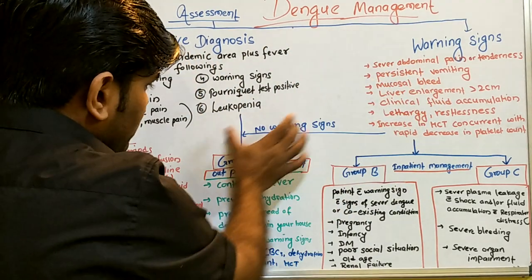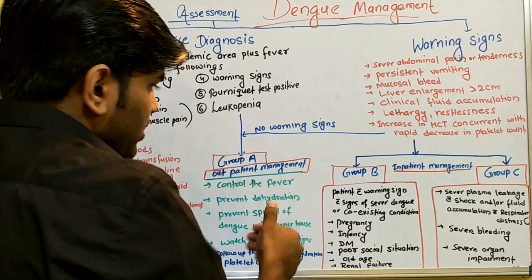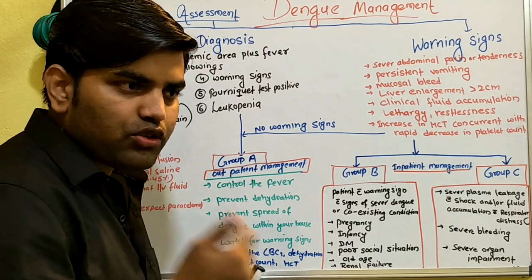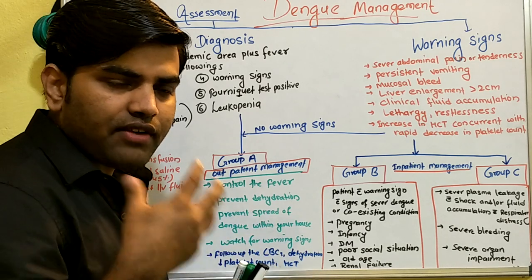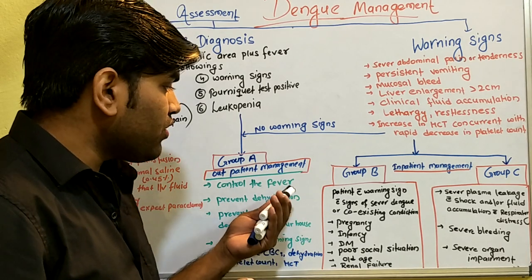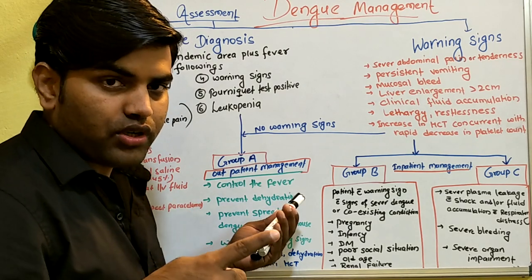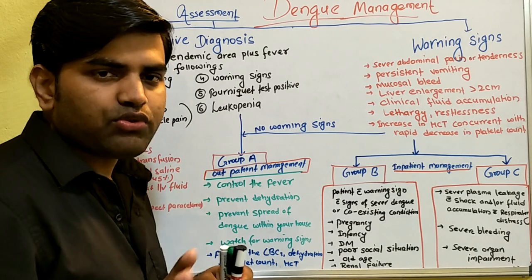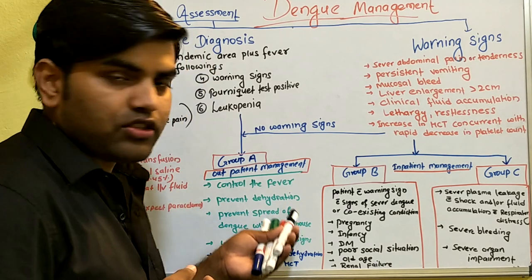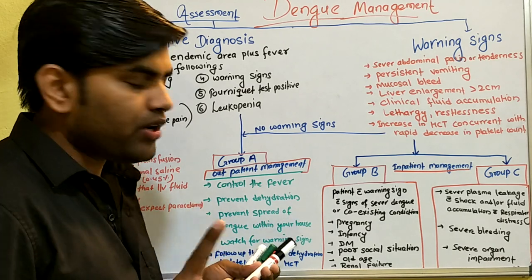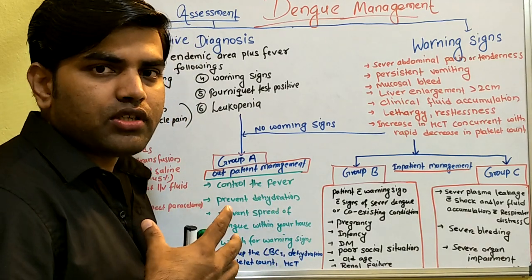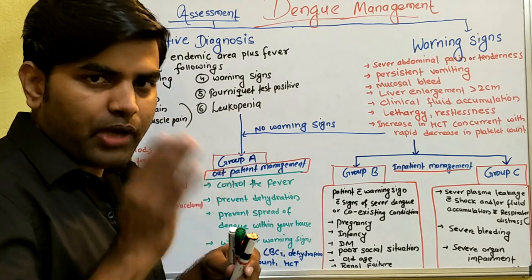For Group A — presumptive diagnosis, no warning signs — outpatient management begins with control of fever. Most importantly, fever must be controlled with paracetamol only. Do not use other NSAIDs like ibuprofen or aspirin, as they increase gastric toxicity and the tendency for GI bleeding. Do not use steroids either. Use paracetamol four times a day, or tepid sponging with cold water to reduce high fever by other means.